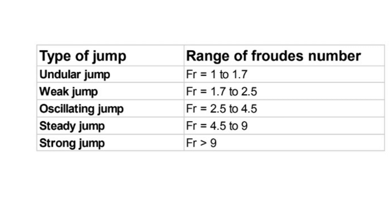Froude's number is used in open channel flow. If Froude number is less than 1, it is called subcritical flow. If Froude number equals 1, it is called critical flow. If Froude number is greater than 1, it is called supercritical flow. When flow occurs from subcritical to supercritical, a hydraulic jump will occur.